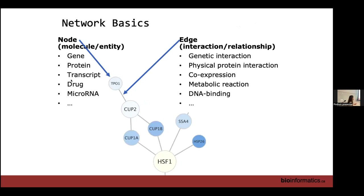The two main aspects of a network are the node and the edge. You can define them however you like — a node can be a person, a power station, a gene, a protein, a transcript, or a drug. It can be anything; you define the aspects of your network. Once we have our nodes, the connections between them — edges — represent relationships, which vary depending on what your nodes are.